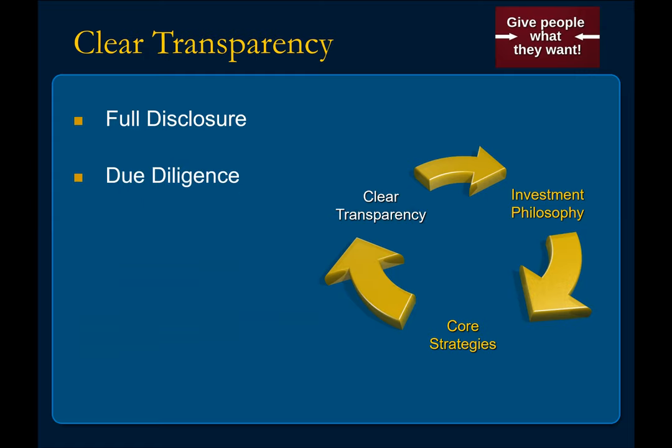Due diligence is a big part of clear transparency. This is on the client's responsibility — they're the ones who have the responsibility of doing their due diligence and making sure that whatever they're getting involved in is the right thing for them. Of course you can help them along in this pathway, but that's where persuasion becomes so manipulative. In a due diligence process, you're supposed to help people identify, for their own benefit, the things that are best for them.